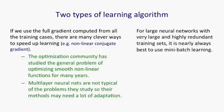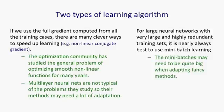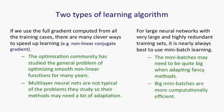But when you have highly redundant and large training sets, it's nearly always better to use mini-batch learning. The mini-batches may need to be quite big, but that's not so bad because big mini-batches are more computationally efficient.